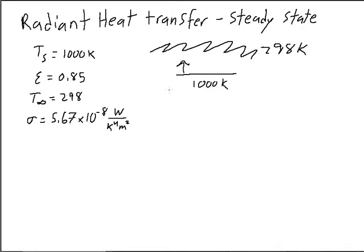If you look in any basic heat transfer text, you would find this equation: Q dot double prime is equal to the emissivity of the surface itself times Stefan-Boltzmann's constant times temperature of the surface to the fourth minus the ambient temperature to the fourth.